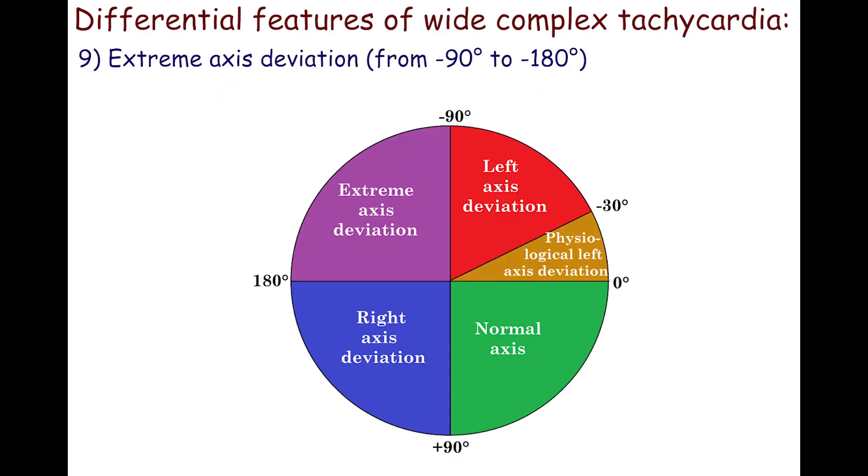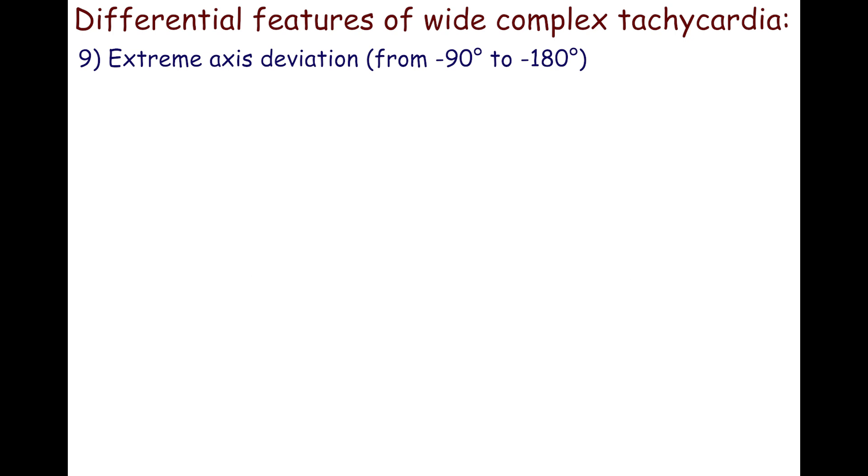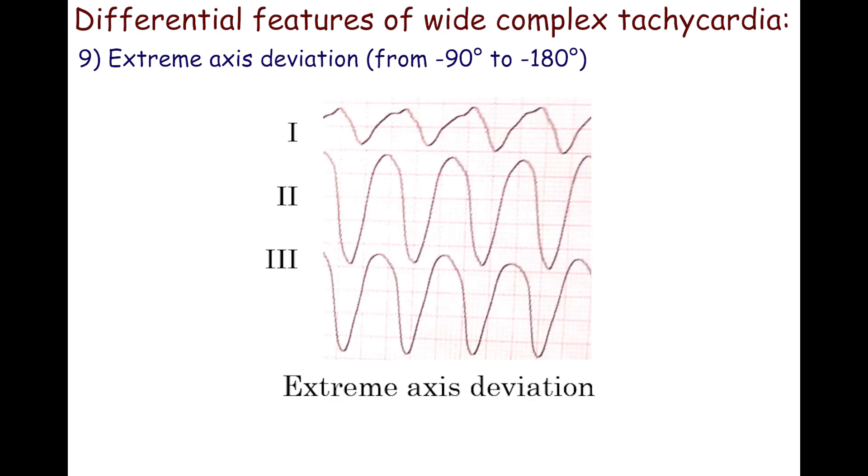The ninth sign is extreme axis deviation, so-called undetermined axis. Tachycardia with cardiac axis from minus 90 degrees to minus 180 degrees favors ventricular tachycardia, except fascicular and outflow tract ventricular tachycardia. QRS complexes are negative in leads 1, 2, 3 and AVF.